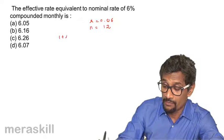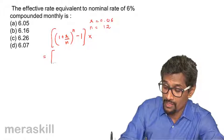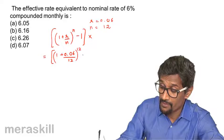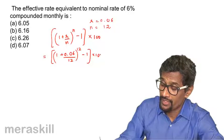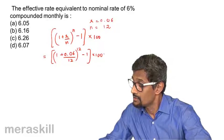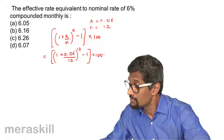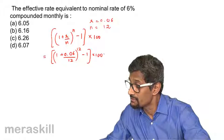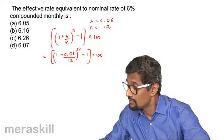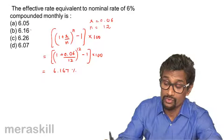So that turns out to be 1 plus 0.06 divided by 12, raised to 12, minus 1 into 100. Which turns out to be roughly 6.167%. So which is 6.16.